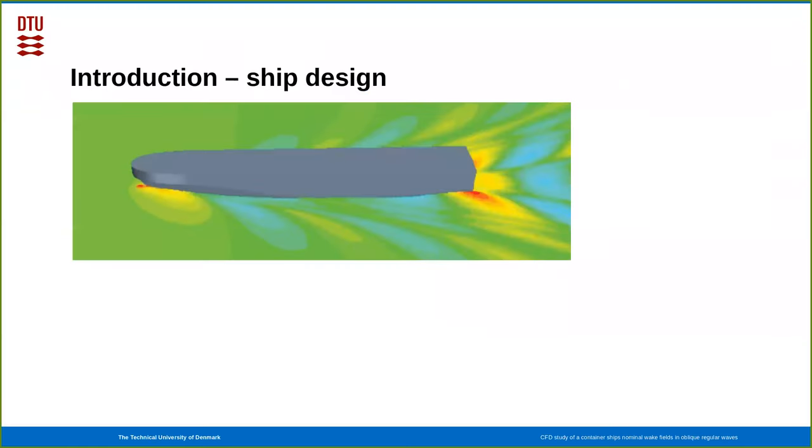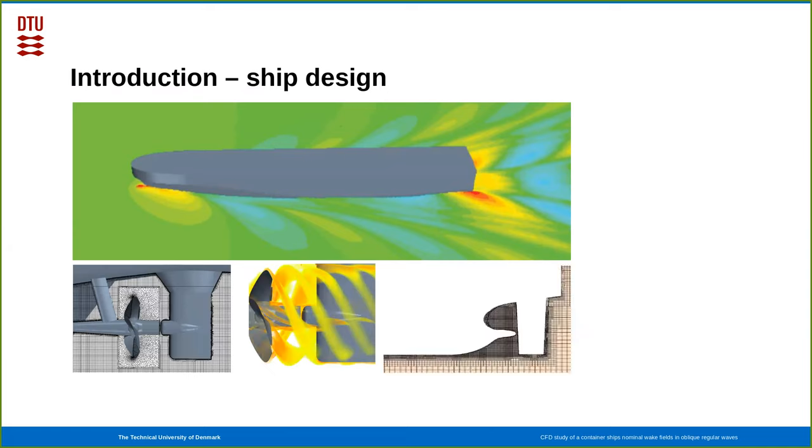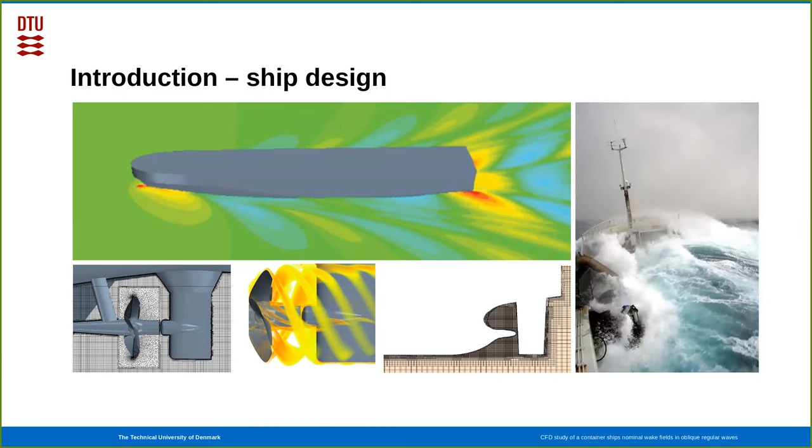When we design a ship, we usually do that in calm water, either with CFD or in towing tanks. Similarly for the propellers, we may either resolve them fully, or we may remove them and then consider the flow field induced by the presence of the ship sailing in calm water at the location of the propeller, and then use potential flow theory to design the propeller. But of course, reality is that ships are not always sailing in calm waters, and the research question is therefore how sailing in oblique waves influences the nominal wakefields for the propeller, and hence potentially also change the design foundation for the propeller.